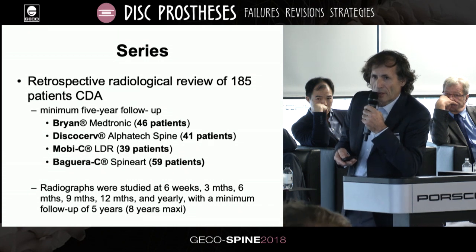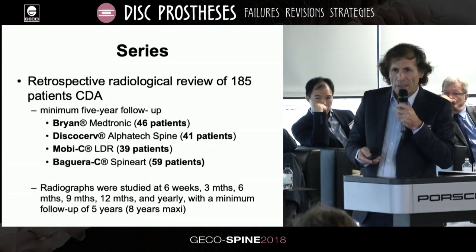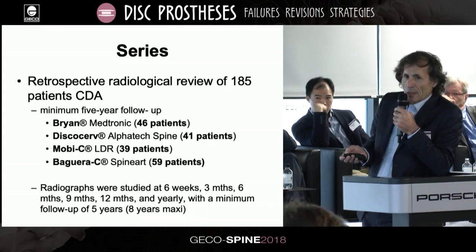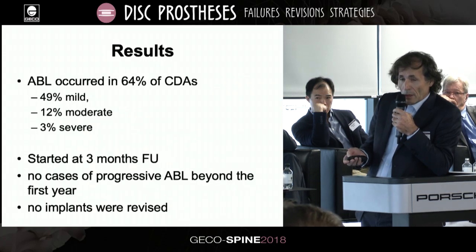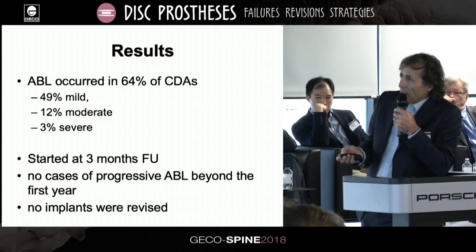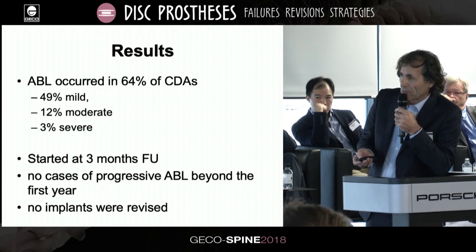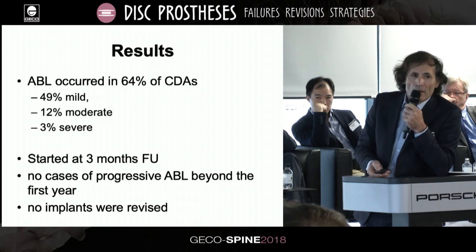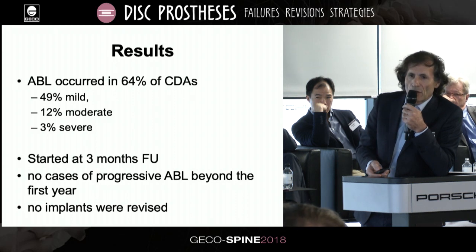The series comprised 185 CDAs with Baguera unconstrained, ball and socket, and semi-constrained implants. ABL occurred in 64% of CDAs: 49 mild, 12 moderate, and only 3% severe. ABL starts at three months follow-up. There are no cases of progressive ABL beyond the first year. No implants were revised.